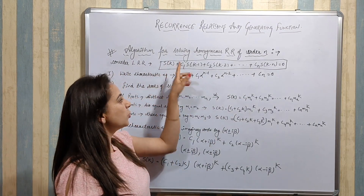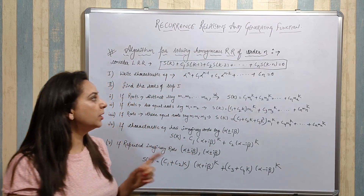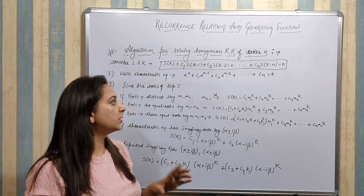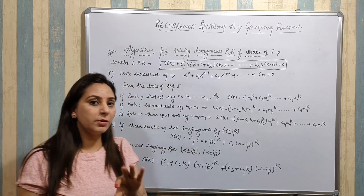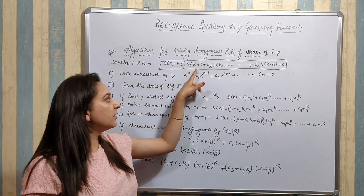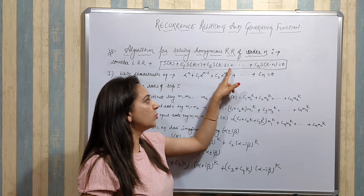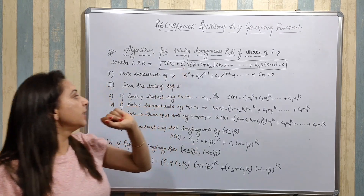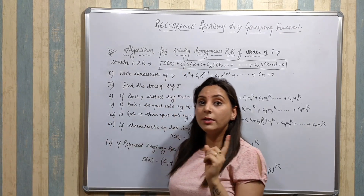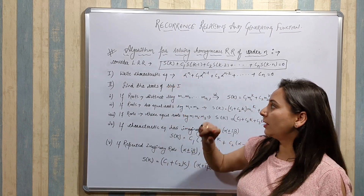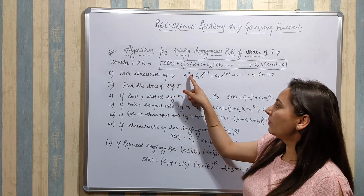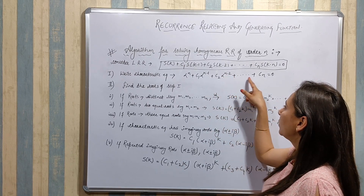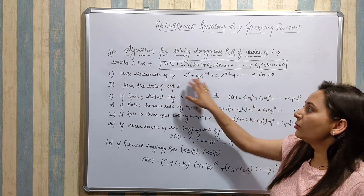The next concept is the algorithm for solving a homogeneous recurrence relation of order N. First, write down the given recurrence relation: S(K) + C1·S(K-1) + C2·S(K-2) + ... + Cn·S(K-N) = 0. Then find the characteristic equation: α^N + C1·α^(N-1) + C2·α^(N-2) + ... + Cn = 0.